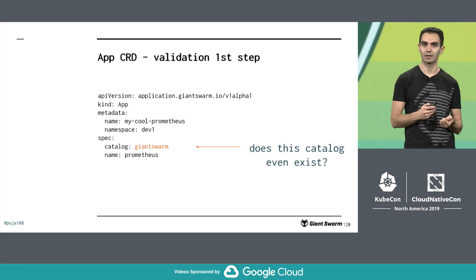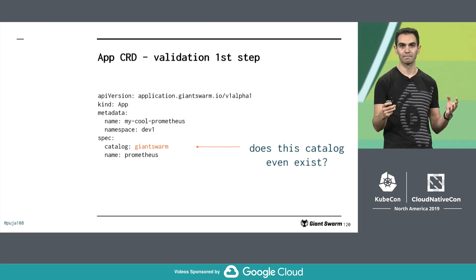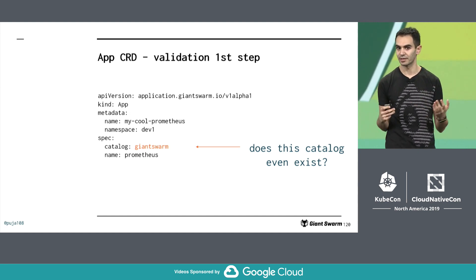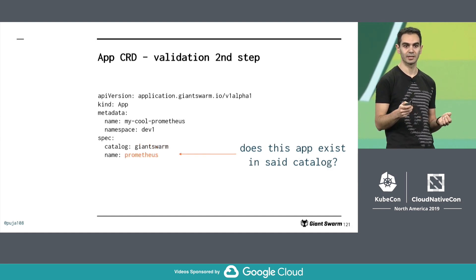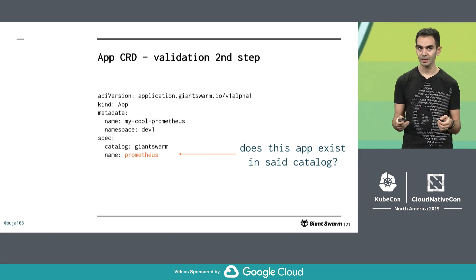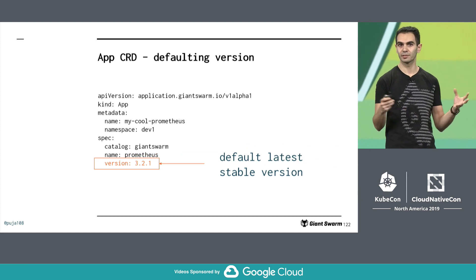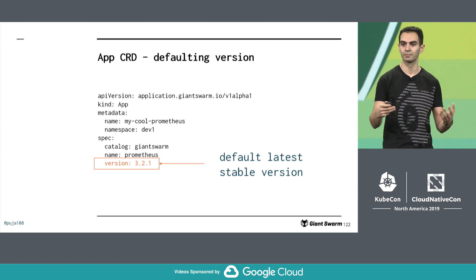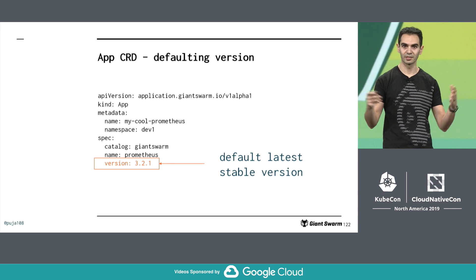On the validation side, we can validate and say: is this catalog even existing? And we can give feedback about what catalogs exist if the user chose one that isn't there. Then we can go on and say: is this app actually in this catalog? And if they gave a version, maybe we can validate that too. But if they didn't, maybe we just default the latest stable version — because if a user installs it today, they might want a stable, non-CVE-inflicted version, so we default the latest stable.